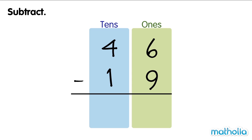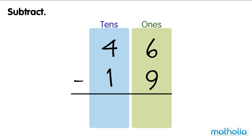Let's find forty-six minus nineteen. Start by subtracting the ones. We cannot subtract nine ones from six ones. So, we regroup one ten into ten ones. Now we have three tens and sixteen ones. Now we can subtract the ones. Sixteen ones minus nine ones equals seven ones.